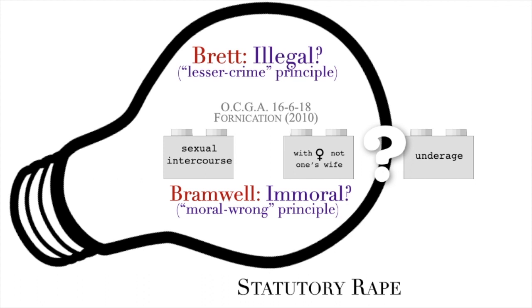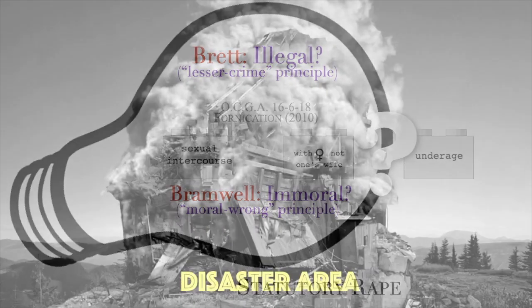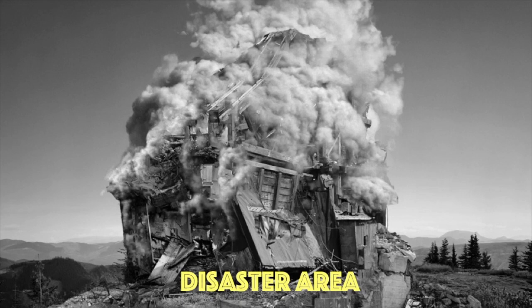Clarity is what we demand of the criminal law, and neither the Bramwell nor the Brett approaches deliver it. In the over-an-ounce-of-marijuana case, isn't Brett better in terms of clarity? That depends on how clear the rest of the criminal code is and what it happens to contain — the ordinary citizen proceeds at her peril. I conclude that both the Bramwell and Brett approaches represent a disaster area. The drafters of the Model Penal Code strove above all to bring order and clarity to this unruly area. We will begin in the next part with its doctrine regarding ignorance and mistake.